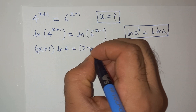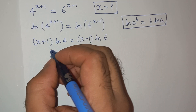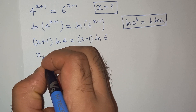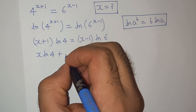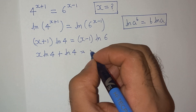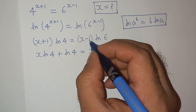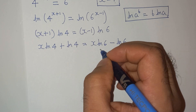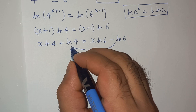Now let's open the bracket. x multiplied by log 4 is x·log 4, plus log 4, equals x multiplied by log 6, which is x·log 6, minus 1 multiplied by log 6, which is log 6.